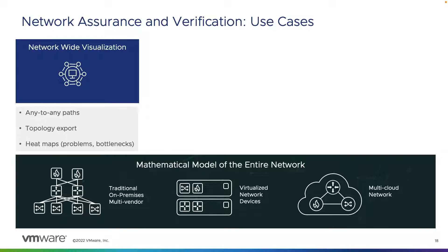The first thing we're going to talk about is network-wide visualization. This gives us the capability of utilizing the network map to do full topology visibility, heat maps, detect problems and bottlenecks within our infrastructure — both virtual and physical — along with the capability of doing path mapping between a source and destination. This could be virtual to physical, physical to physical, physical to virtual, and vice versa.